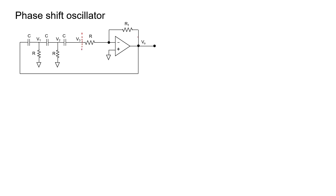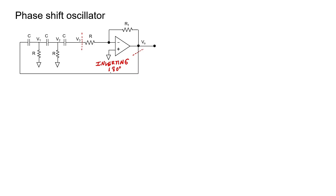Let's now look at another type of oscillator. The phase shift oscillator has a feedback network and an amplifier, just like the Wien Bridge oscillator. Unlike the Wien Bridge oscillator, though, the amplifier for a phase shift oscillator is inverting, which means it shifts the phase of the signal by 180 degrees. The filter portion of the phase shift oscillator has three capacitors all in series. It first looks like it could be a high-pass filter. But we actually have a bandpass filter effectively, because the 180-degree phase shift from the amplifier converts the high-pass filter into a bandpass filter.